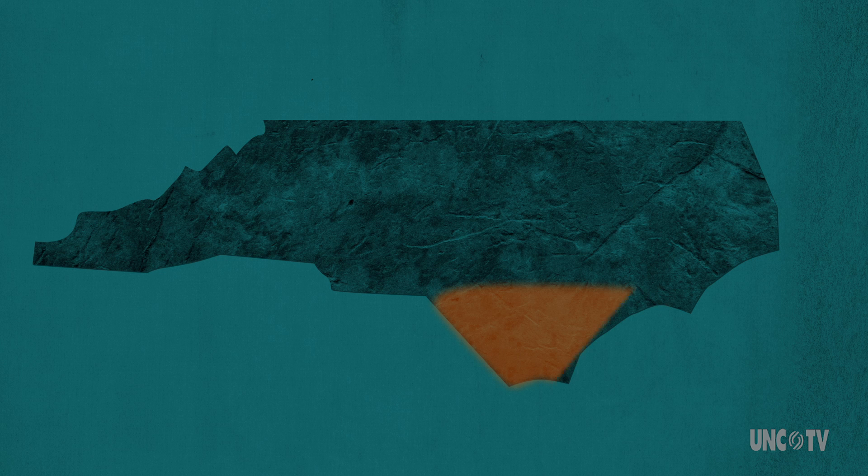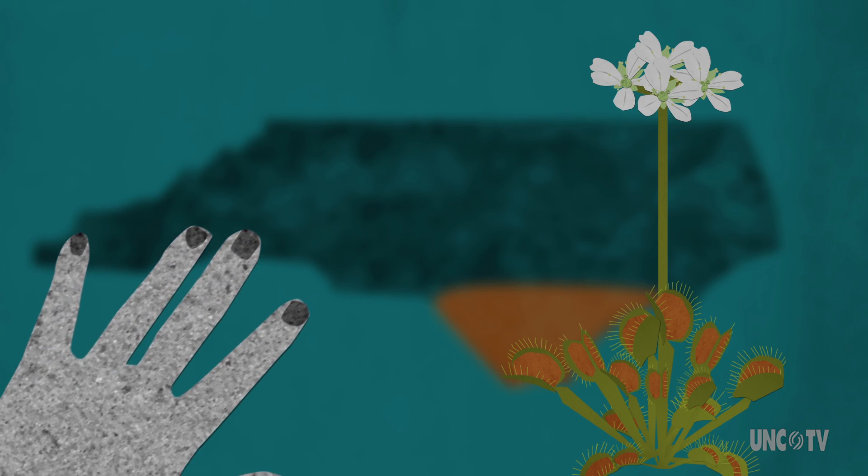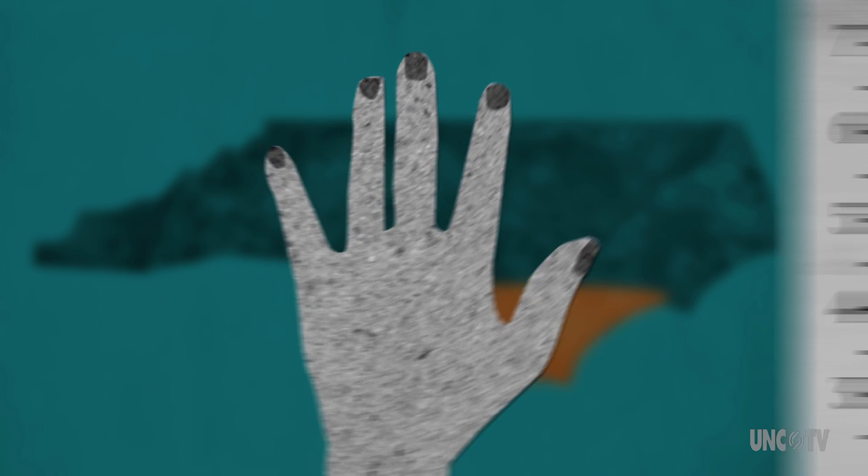If you are in the 74-mile habitat in southeastern North Carolina that is home to flytraps and you stumble across one, don't be tempted to pick the flower or the plant. Due to its status as threatened, if you poach a Venus flytrap, it's a felony.